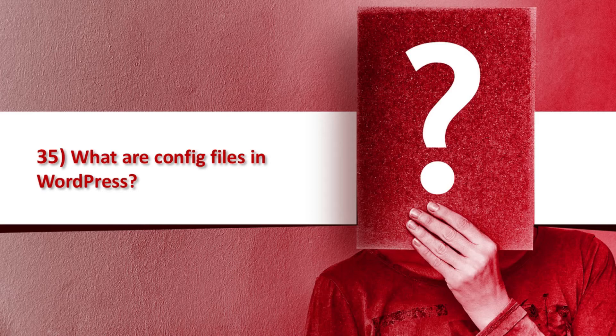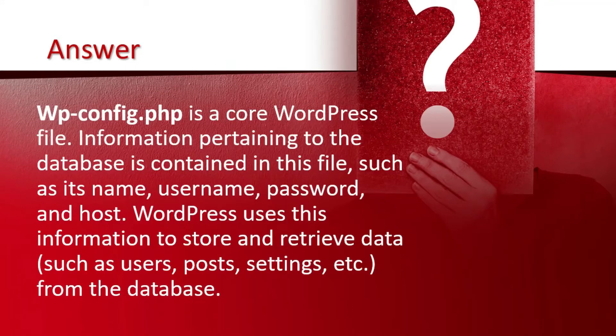Question 35: What are config files in WordPress? wp-config.php is a core WordPress file. Information pertaining to the database is contained in this file, such as its name, username, password, and host. WordPress uses this information to store and retrieve data, such as user posts, settings, etc., from the database.